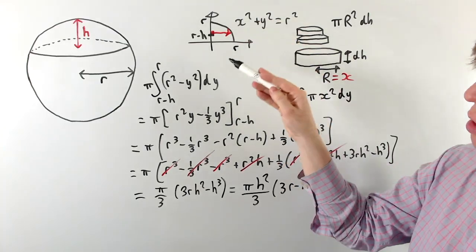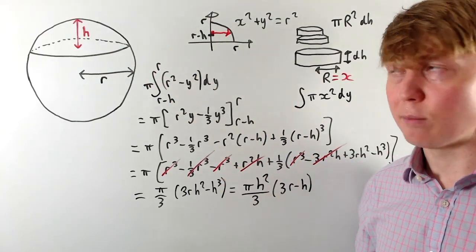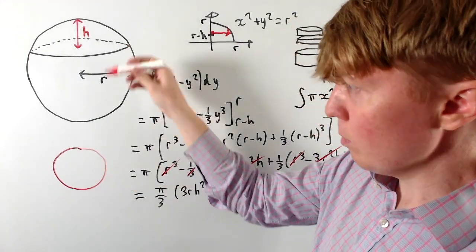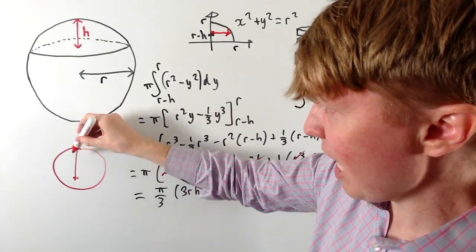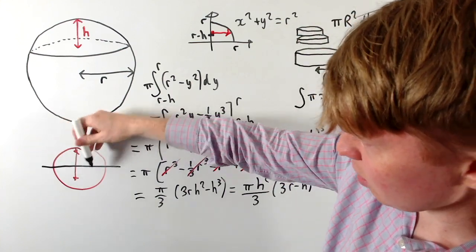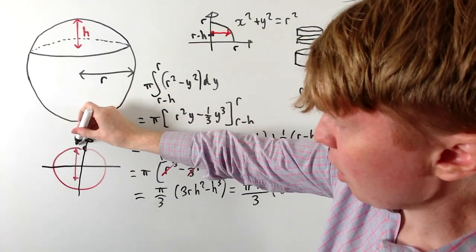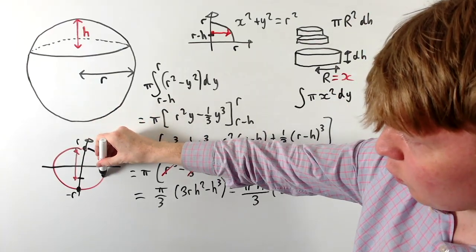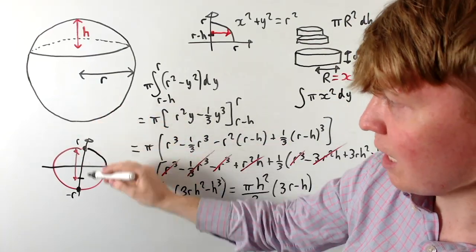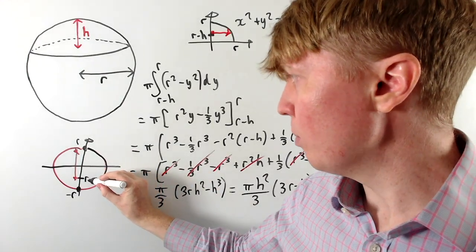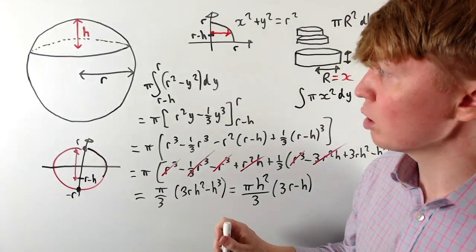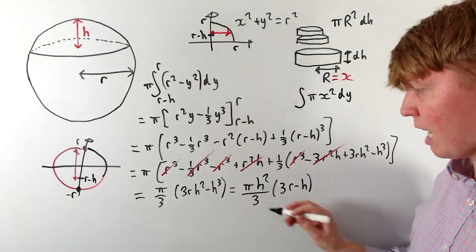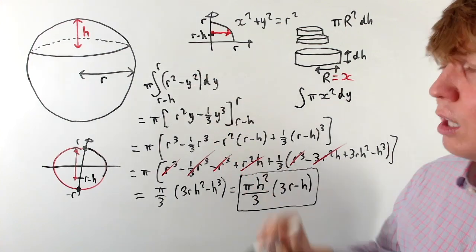This works for the minor spherical cap shown — one that's less than half the sphere — but the formula also handles cases where h is bigger than r. If h is larger, the lower limit r − h becomes negative on the y-axis. We do exactly the same integral from r − h up to r, and all these calculations remain valid. So we have a nice formula that works for all spherical caps.